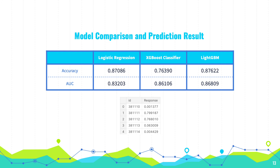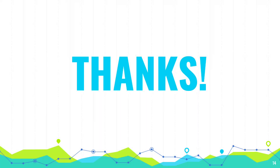After the basic exploratory analysis, the final step is to choose a better model. I chose three models: logistic regression, XGBoost, and LightGBM. According to their accuracy and AUC score, LightGBM is the highest. In the table below, there is a sample of the predictions, where the response is the probability that the customer is willing to buy car insurance. And that's it — thank you everyone.